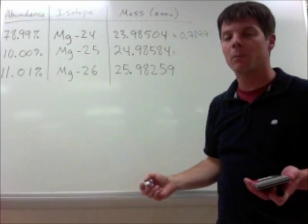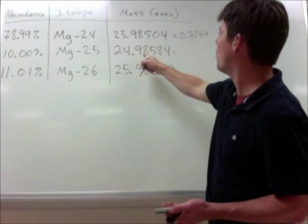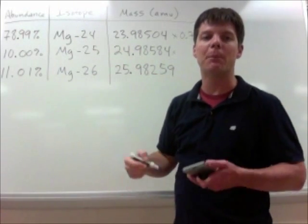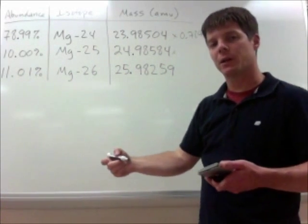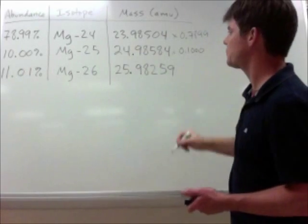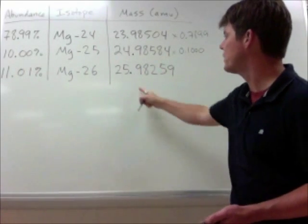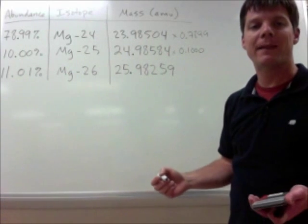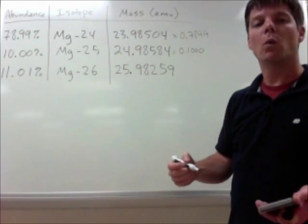I'm going to do the same thing for magnesium-25. 24.98584 AMUs is going to multiply by 0.100. And finally for magnesium-26, I'll take the value 25.98259 and multiply that by 0.1101.